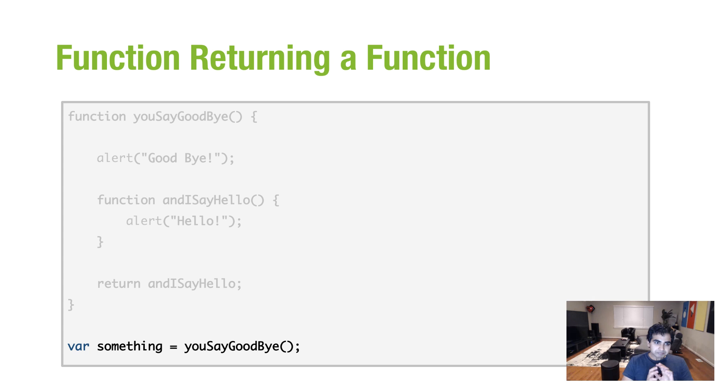There's an outer function, which is youSayGoodbye. And there's an inner function, andISayHello. And you can see these two boxes kind of represent the parent-child relationship of these two functions. Now, here's what's important. Now, let's say that I want to do something very similar to what I did earlier when calculating the area of a rectangle. I'm going to initiate a variable called something, and I'm going to set it to the value of the youSayGoodbye function.